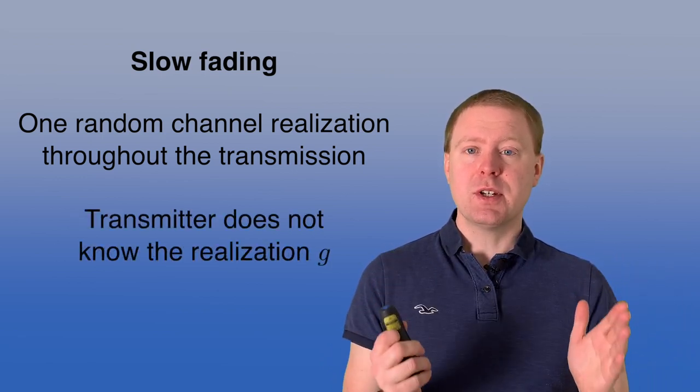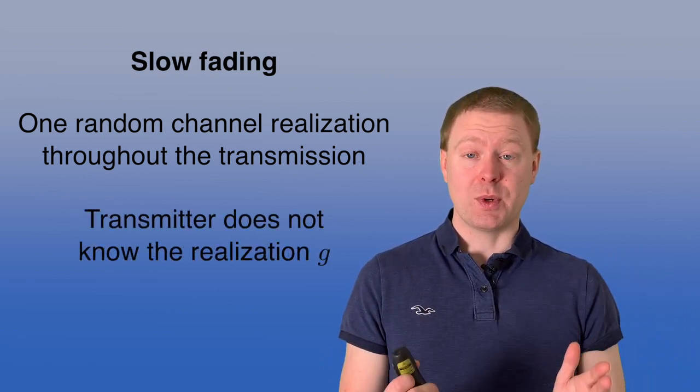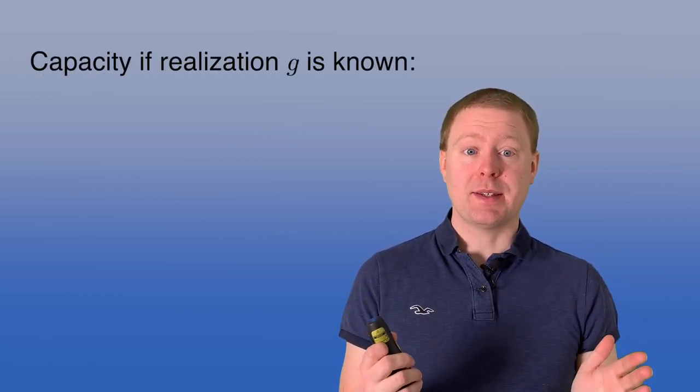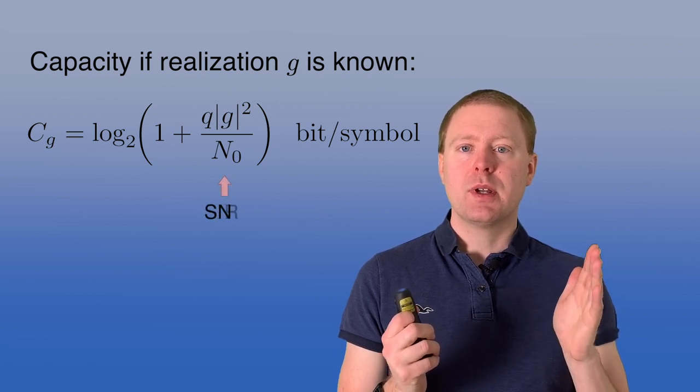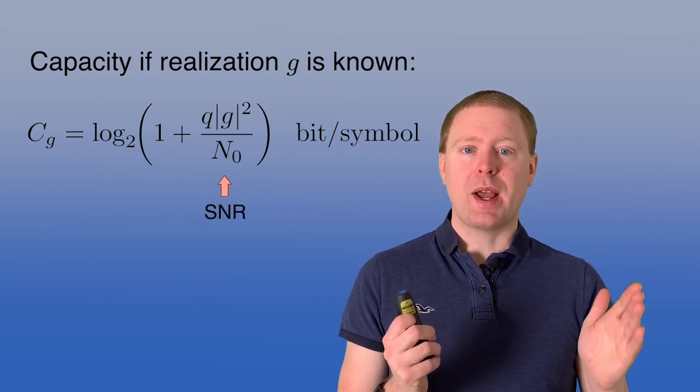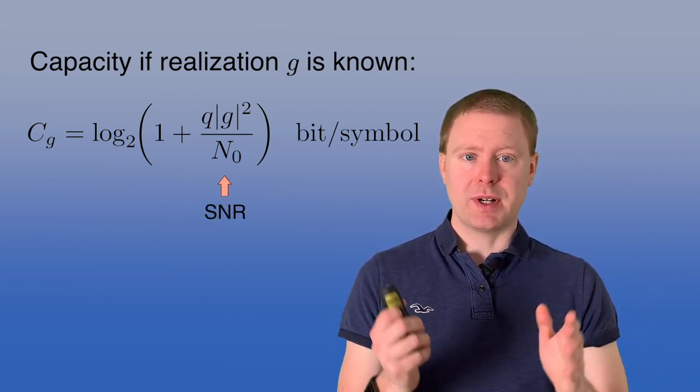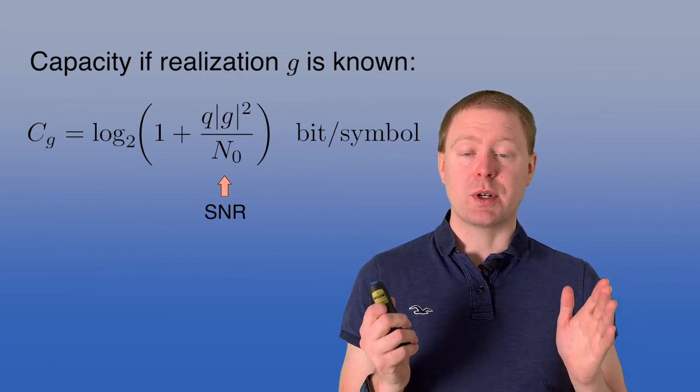The problem is the transmitter doesn't know what the realization is. If it knew, then we can compute the capacity. We call it Cg, it's log2 of 1 plus q, then we have the absolute value g squared divided by n0, for this SISO channel that I'm considering to start with.